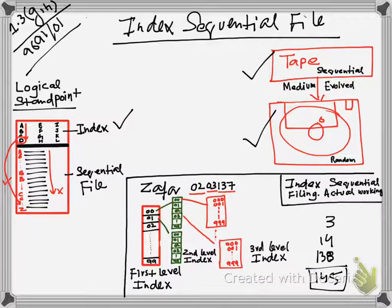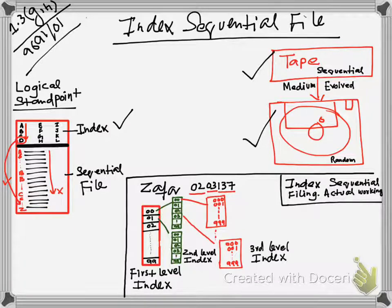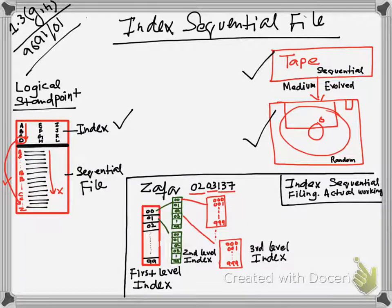Now let's say you want to reach the last record, which is 9999999. How many accesses would you make? First level index: 100, second level: another 100, third level: 1000. With a seven-digit number that makes up one million records total. In the worst case, the maximum number of searches you would make to reach any record in one million records is 1200. That is the advantage of index sequential filing over random access — effort is less to access any record.